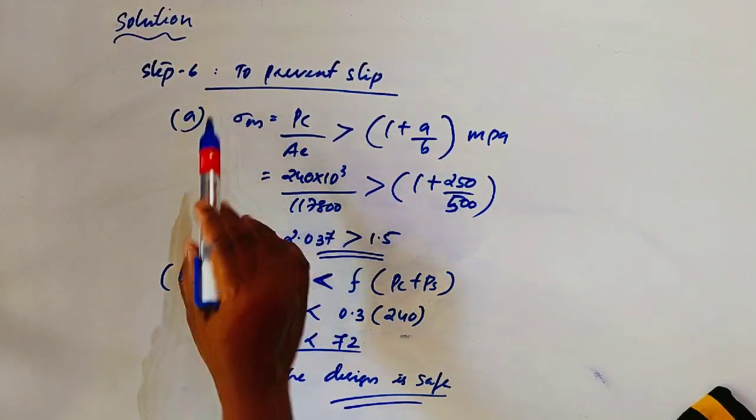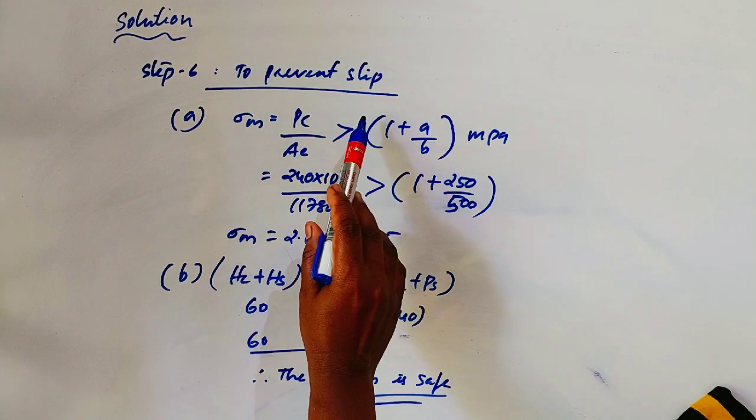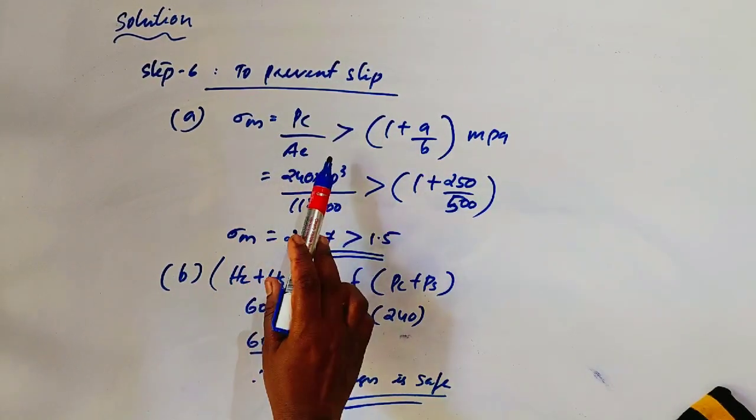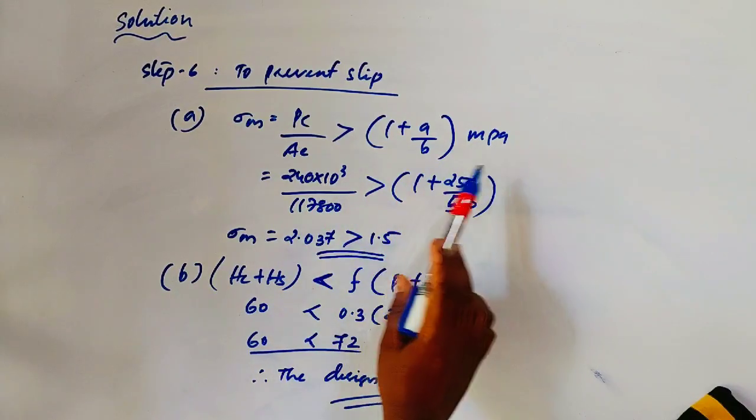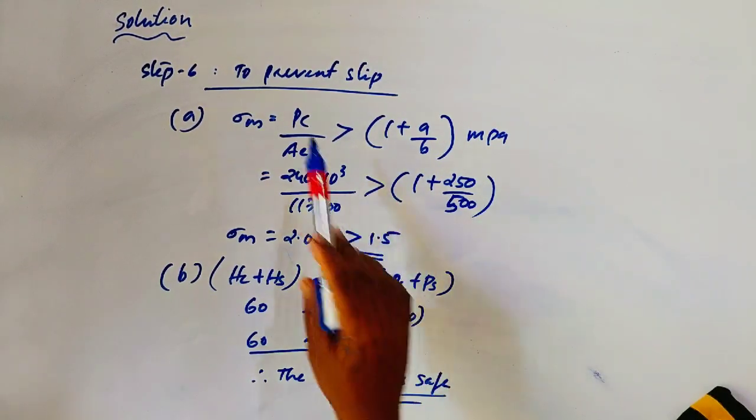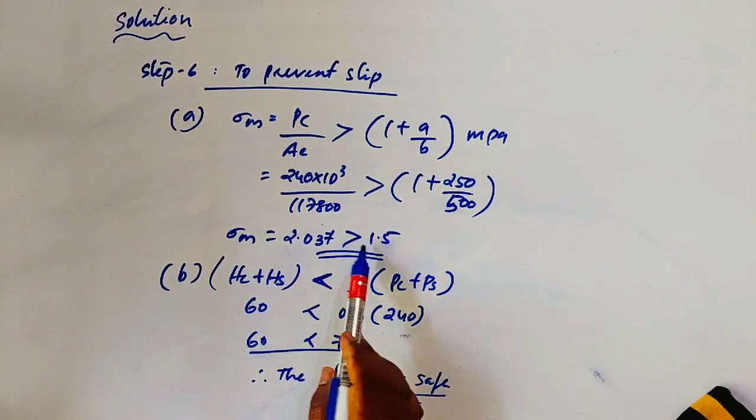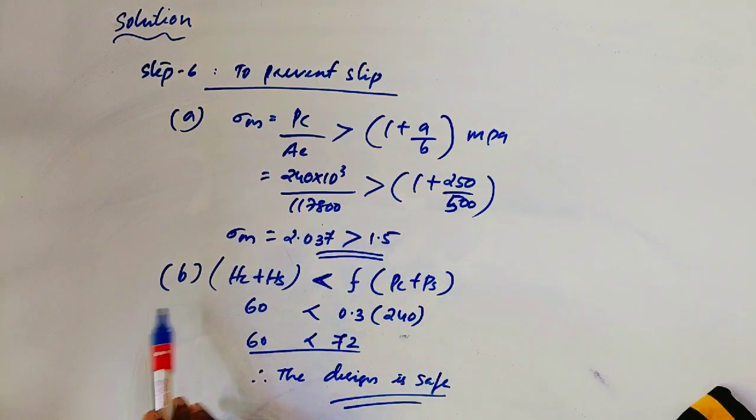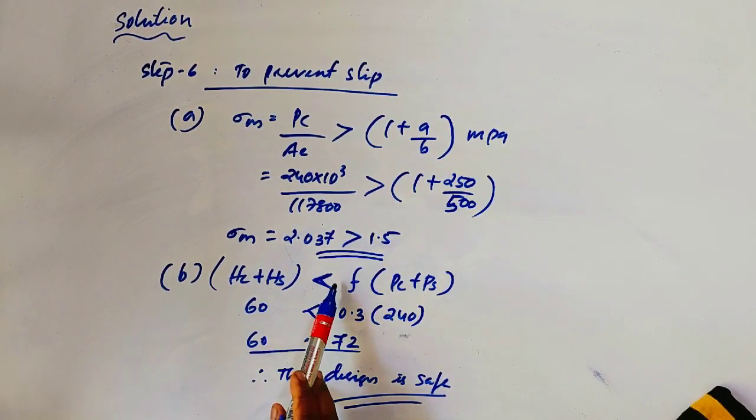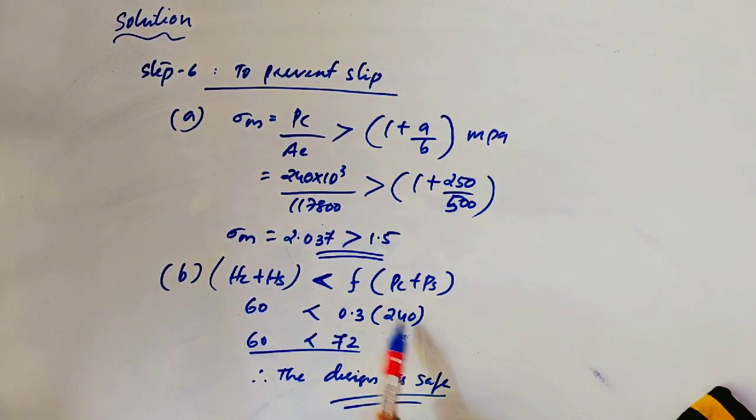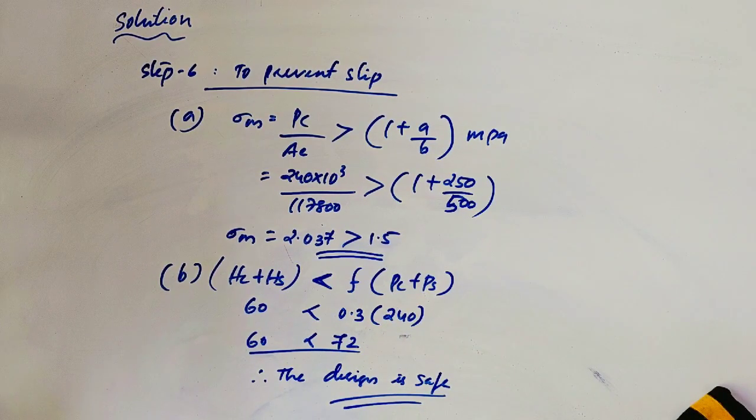Step 6: To check the slip, to prevent slip. First condition: sigma M equal to PC divided by AE, that is greater than 1 plus A by B. Sigma M equal to 2.037 greater than 1.5. Second check: HC plus HS is less than F into PC plus PS. 60 is less than 0.3, the coefficient of friction, into 240. The design is safe here.